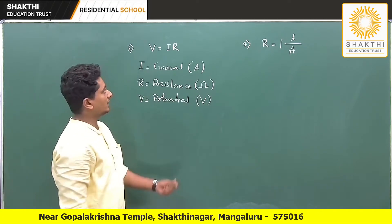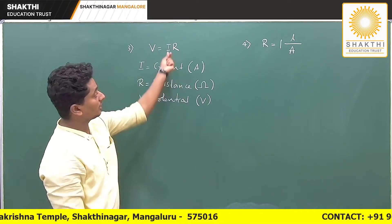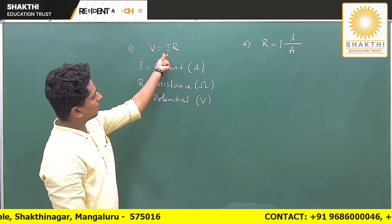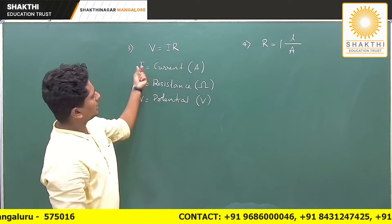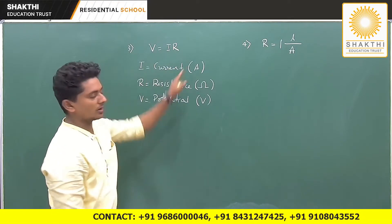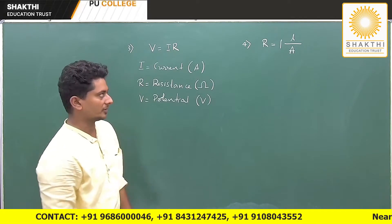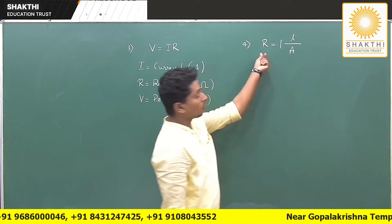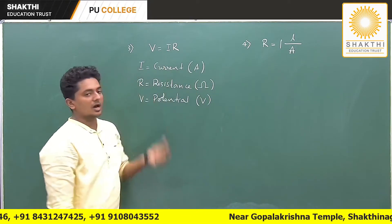Be careful: in the exam, they can give you current and voltage and ask you to calculate resistance, or give current and resistance so you calculate voltage. Any two quantities may be given — you have to calculate the third. The next formula concerns what factors resistance R depends on.